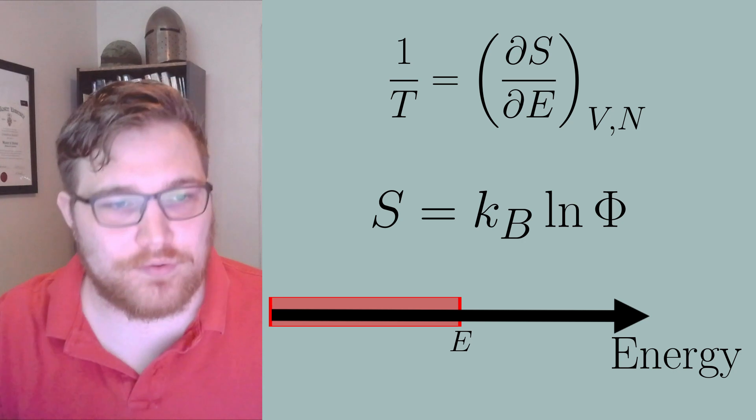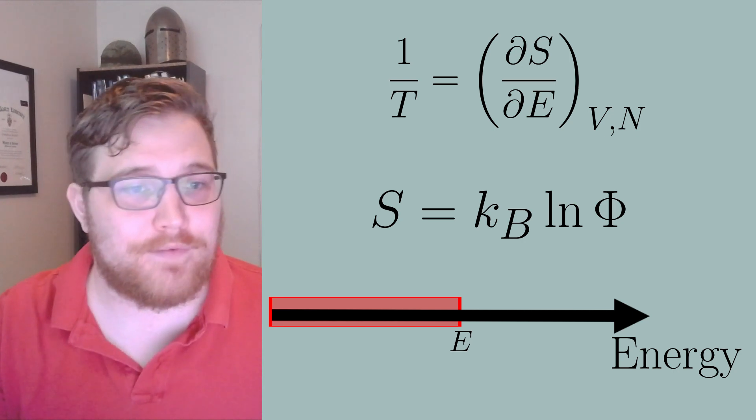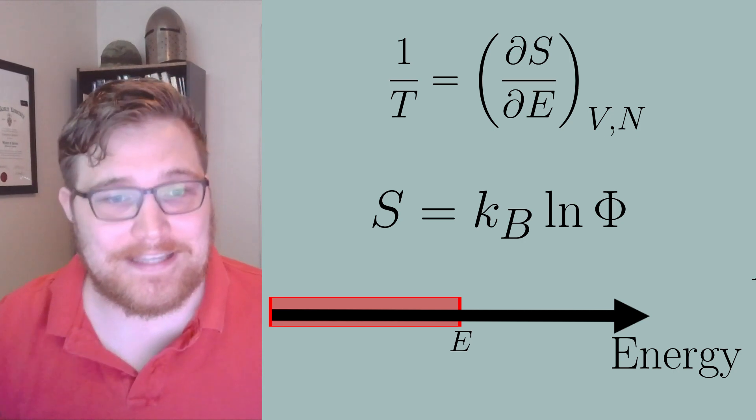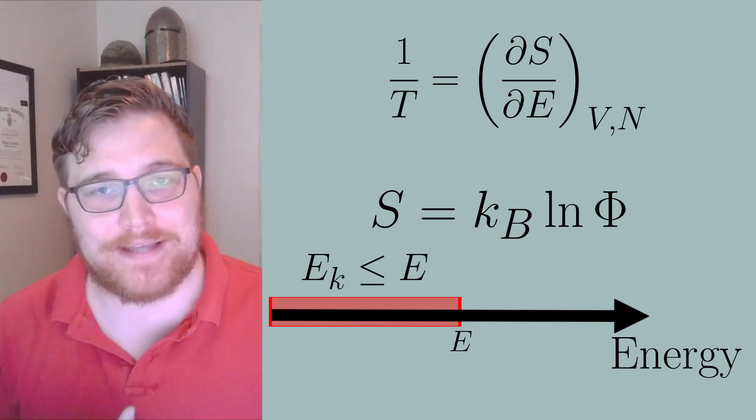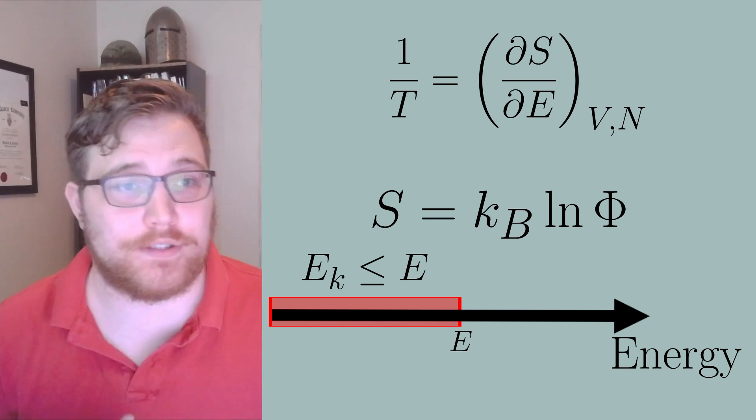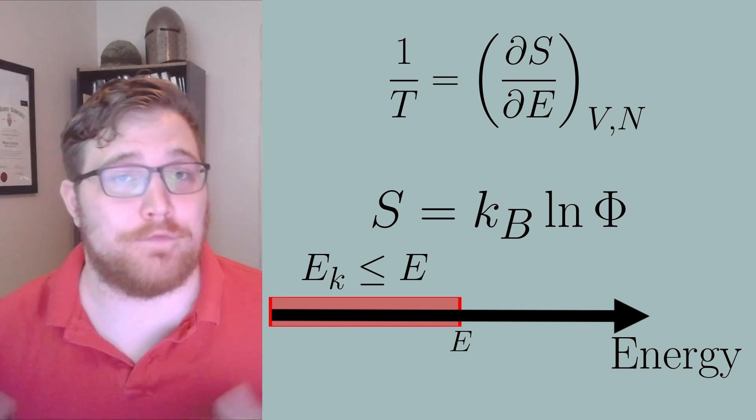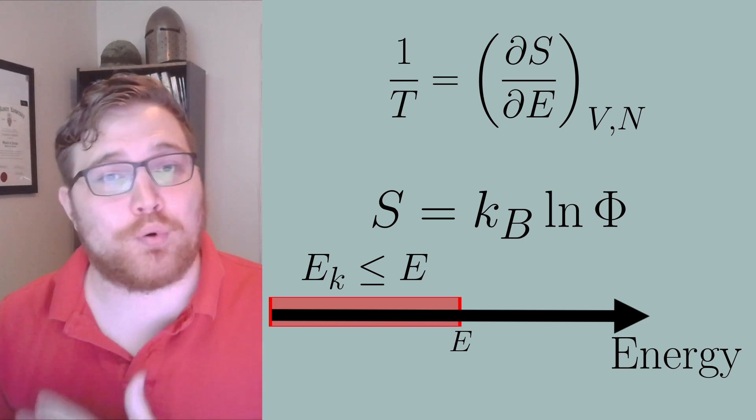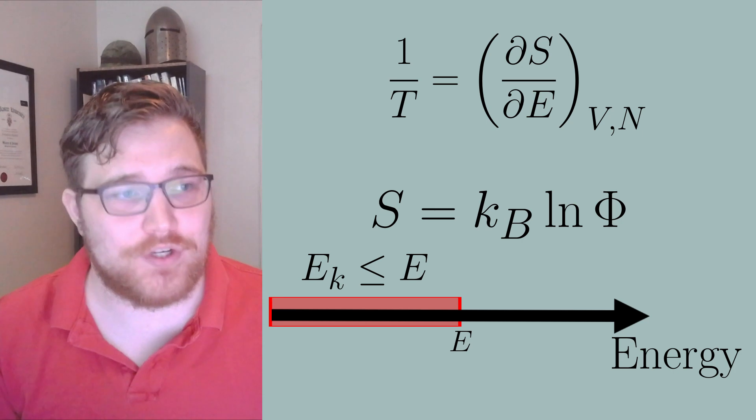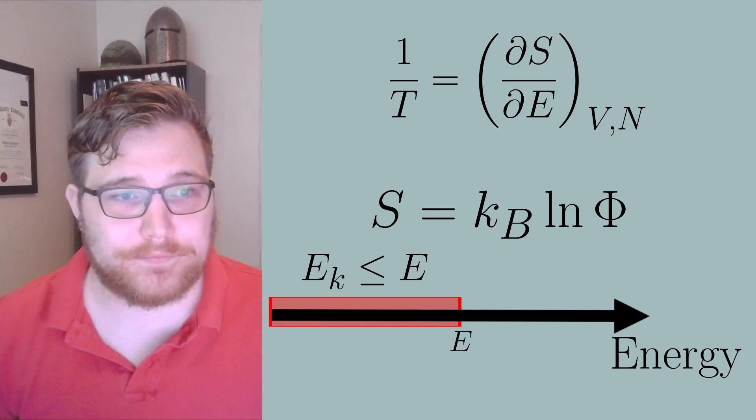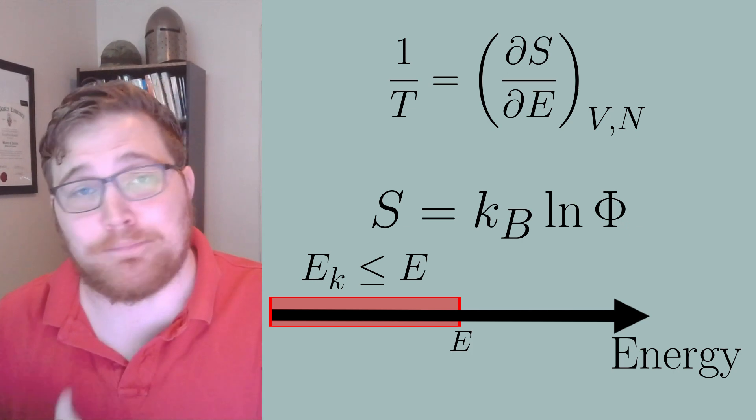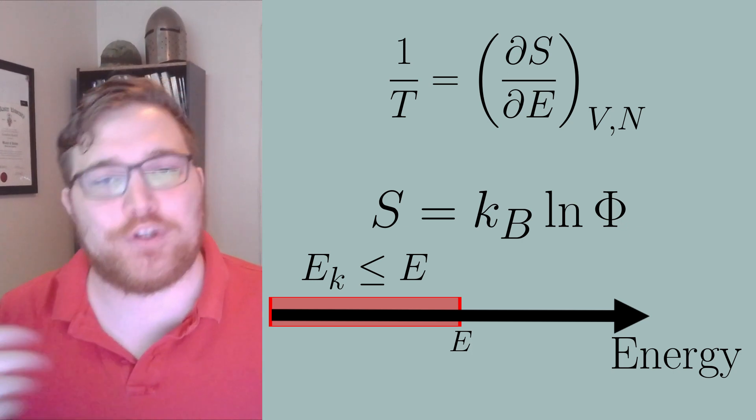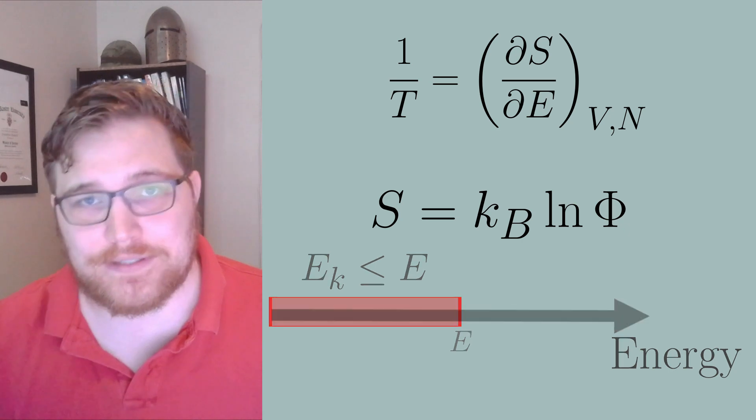So our condition to count microstates is that if an energy is less than E, we add 1 to phi. So we can see this as instead of a surface area calculation, we can see it as a volume calculation. The important consequence of taking this definition is that temperature now is always positive. Since we will always count all microstates with energy below our system's energy, increasing energy always increases entropy.